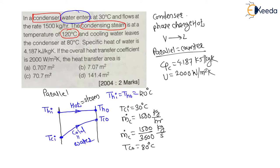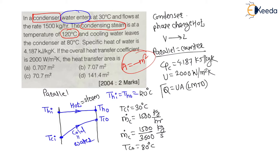We have to find the heat transfer area in m². The heat transfer formula is Q = U·A·LMTD, where U is the overall heat transfer coefficient, A is the area of heat transfer, and LMTD is the log mean temperature difference. The same heat transfer for the heat exchanger equals the heat exchanged with the cold fluid: Q = ṁ·Cp(cold)·(T_CO − T_CI).